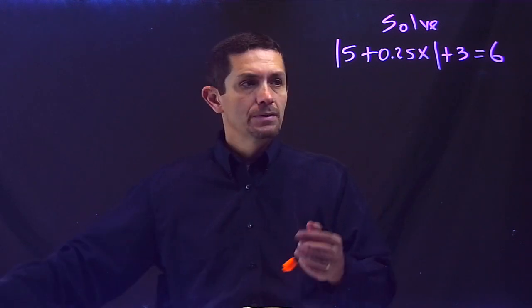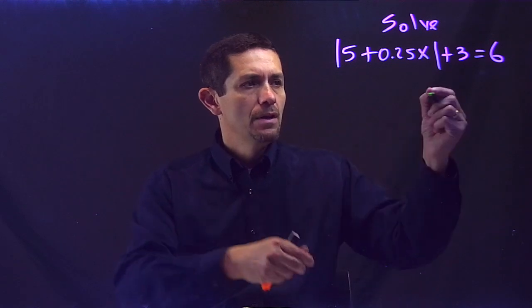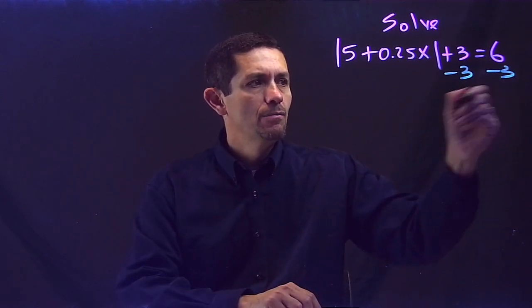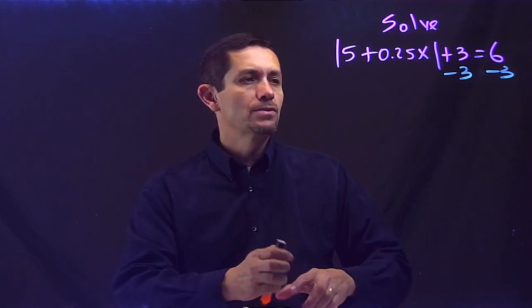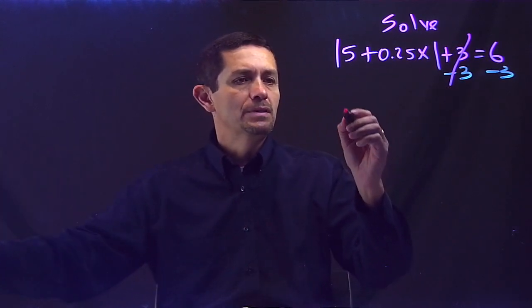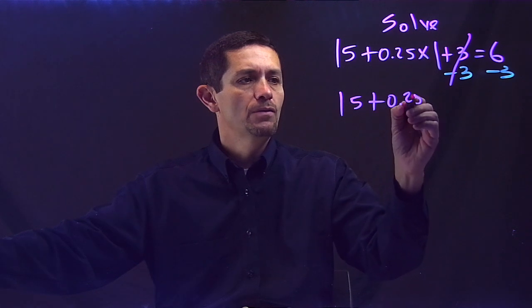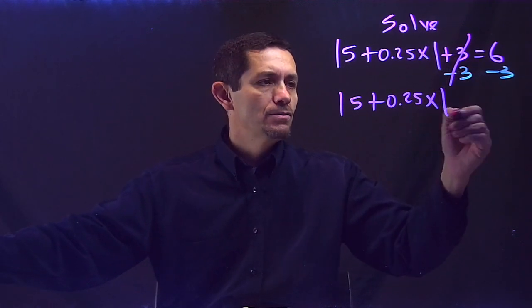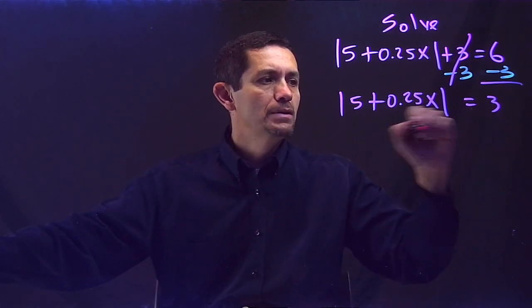So the first step is, I have to get rid of that 3. It's positive, subtract both sides. So it's going to cancel out. And after that, my absolute value will be by itself, which is 5 plus 0.25x, cancel the 3, equals positive 3.